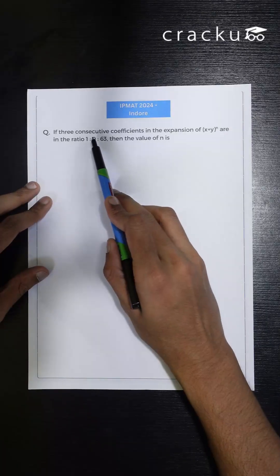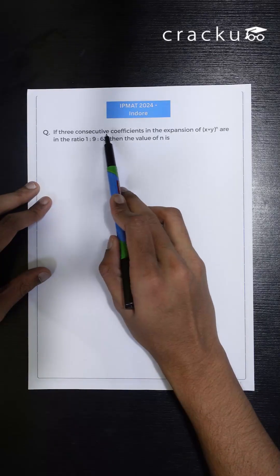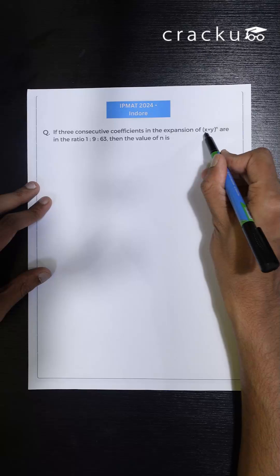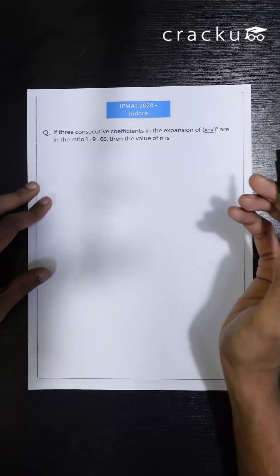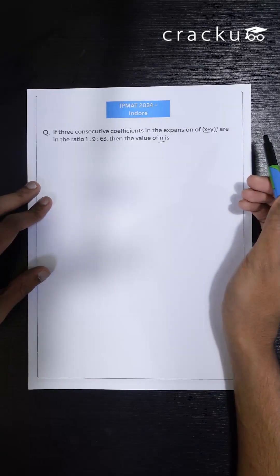This is a previous IPMAT question in which we have been told that three consecutive coefficients of this binomial expansion are in the ratio 1:9:63. We need to find the value of n.